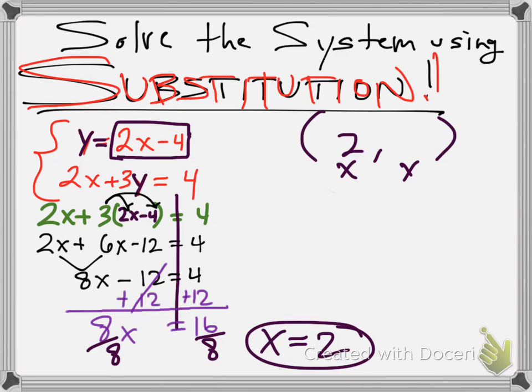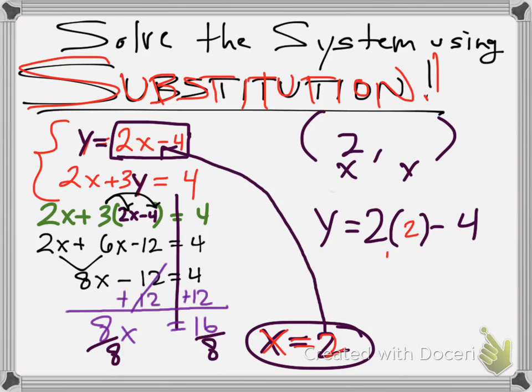So we need to replace 2 into the equation y equals 2x minus 4. We know that x equals 2. 2 times 2 is 4, minus 4 is 0. So y does, in fact, equal 0.